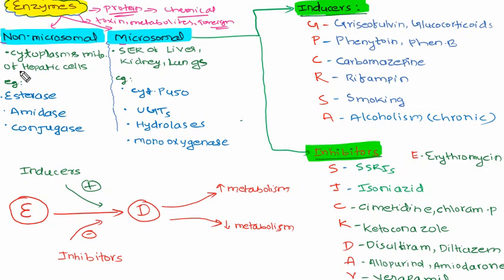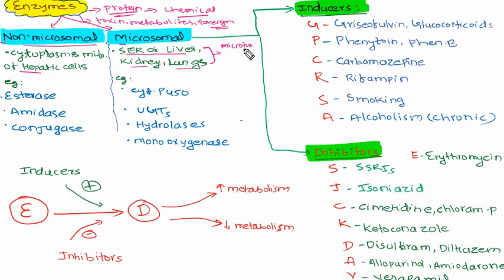Non-microsomal enzymes are located in the cytoplasm and mitochondria of hepatic cells. Microsomal enzymes are located in the smooth endoplasmic reticulum of the liver, kidney, and lungs. The microsomal system is associated with the smooth endoplasmic reticulum.